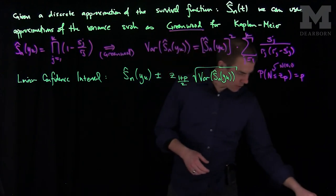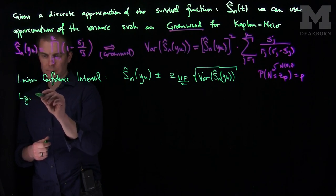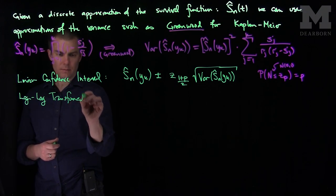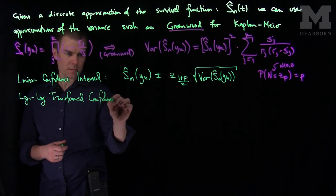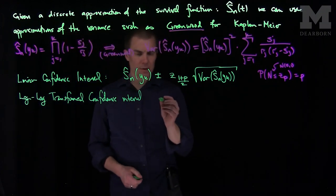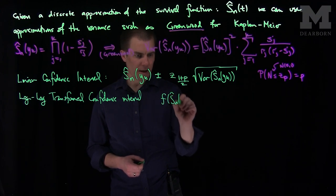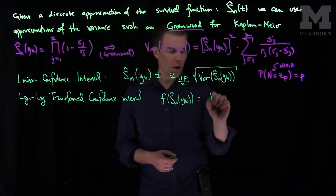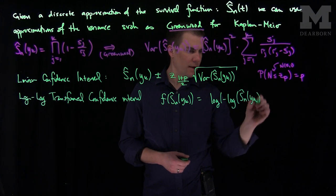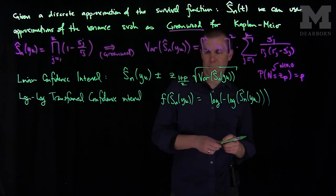Often what you want to do is estimate the log-log transformed interval rather than the linear confidence interval. We consider the function f of Sn hat of yk to be the log of the negative log of Sn hat of yk. We can use the delta method to approximate the variance of this expression. By the delta method we need the derivative of this function.